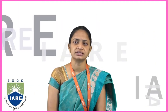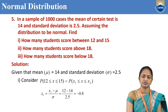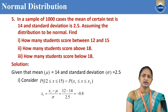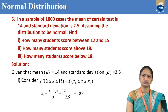We have already discussed some problems based on normal distribution. The next problem is: in a sample of 1000 cases, the mean of a certain test is 14 and standard deviation is 2.5. Assuming the distribution to be normal, find: first, how many students score between 12 and 15; second, how many students score above 18; third, how many students score below 18.